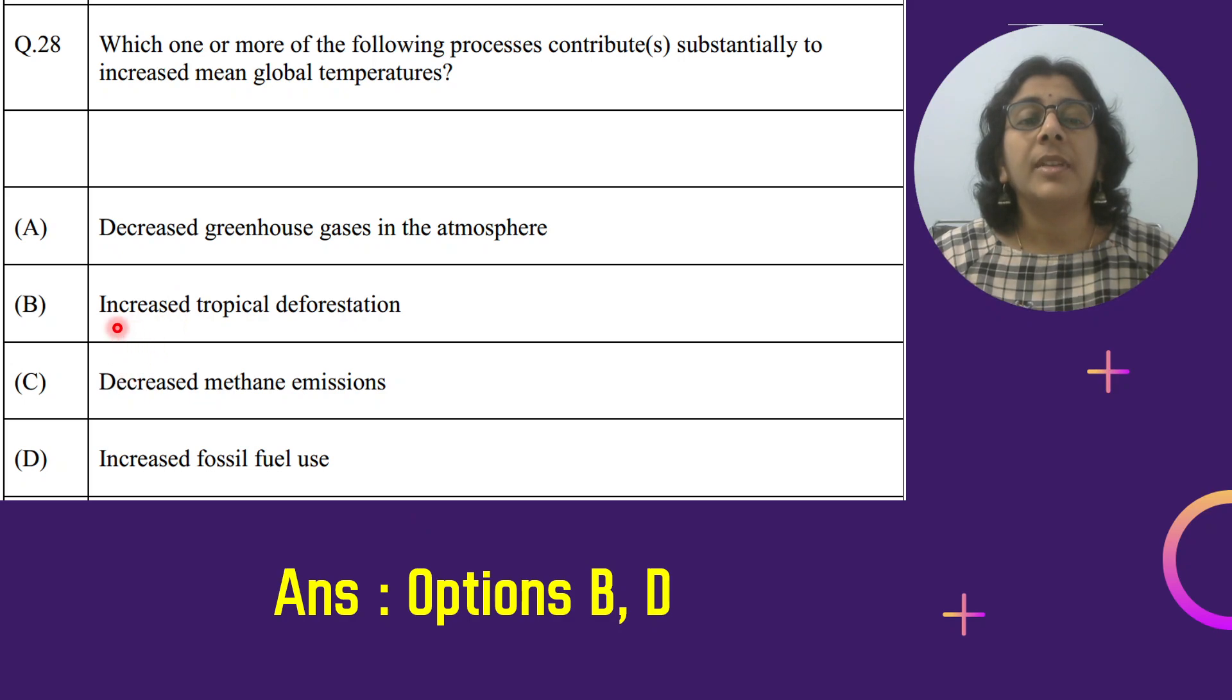Iske alawa dekho, second reason hai increased tropical deforestation. Deforestation matlab humne trees katna shuru kar diya hai. Forest ghaib hote ja rahe hai. CO2 ko oxygen mein convert kaun karke dega? Plants hi karenge na. Toh hum plants ka number hi ghatate ja rahe hai. Toh ye ek reason hai. Or fossil fuel bahut zyada jalaye ja rahe hai, ye ek reason hai.